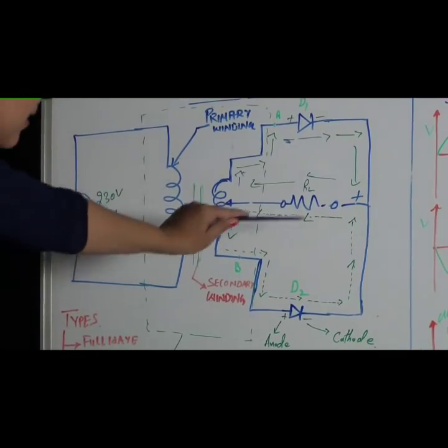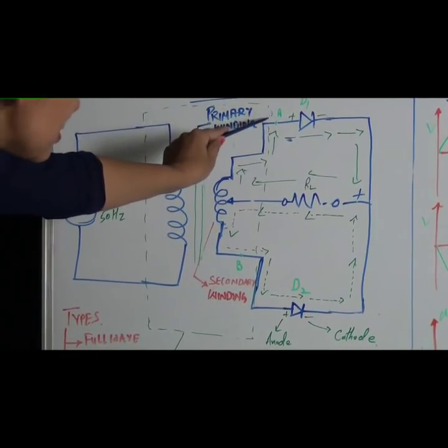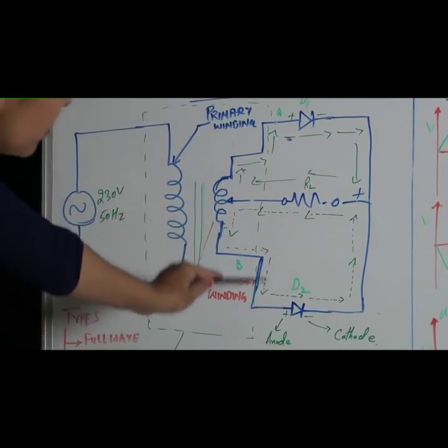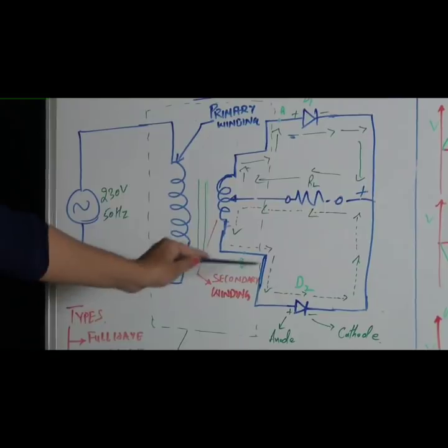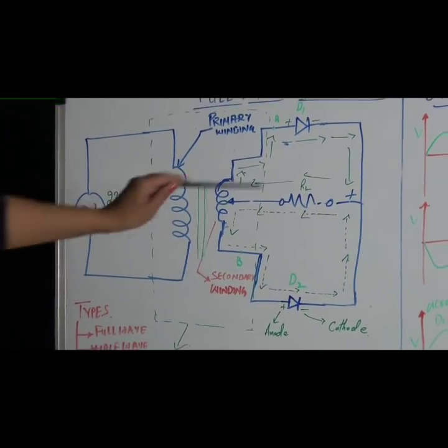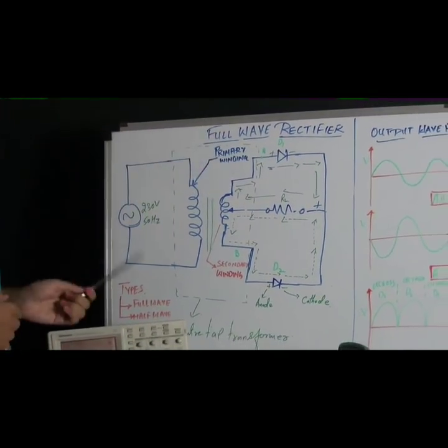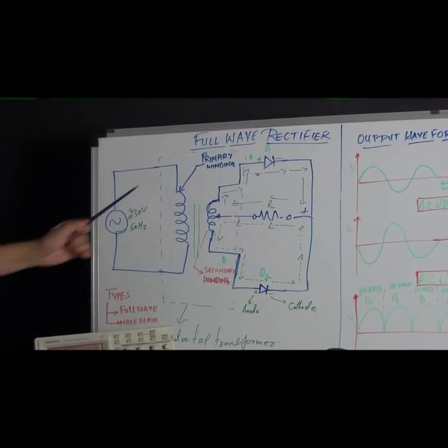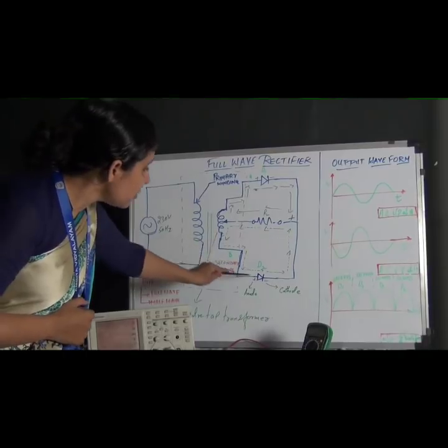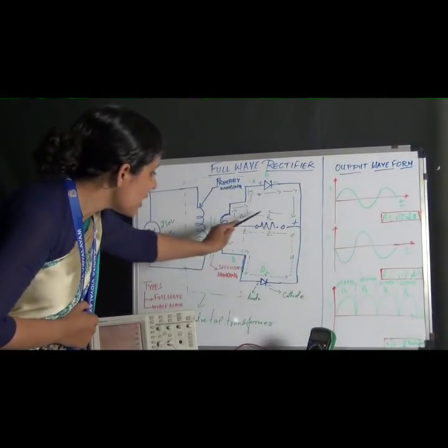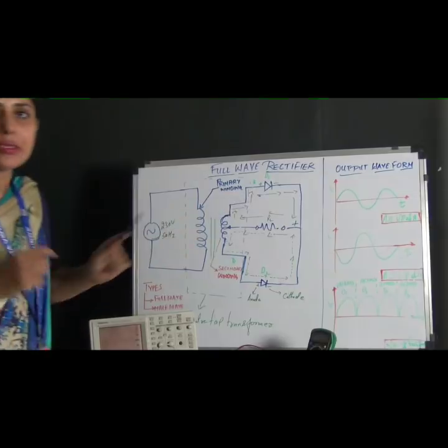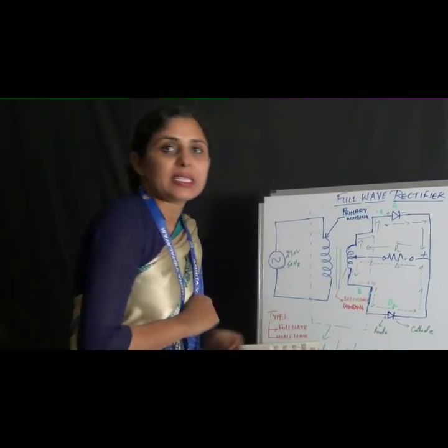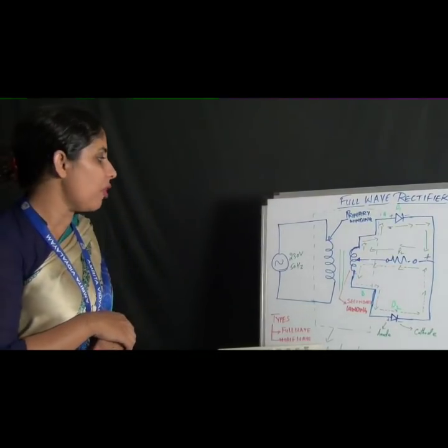In the second AC cycle, this terminal becomes negative and this becomes positive. Now the current flows from diode D2 and then through RL and completes the circuit. Again, the current will not flow from D1 as D1 offers infinite resistance in reverse bias. The flow of current is represented by the dotted lines. Here in this circuit we are exploiting the property of diodes, that is the unidirectional property of diodes.